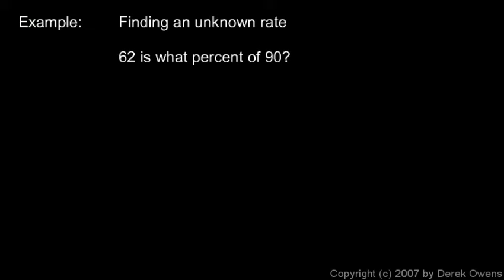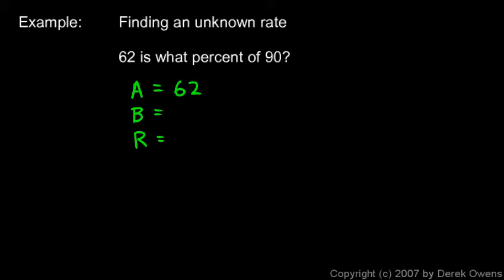Here's an example involving finding an unknown rate: 62 is what percent of 90? The phrase 'what percent' tells us the rate is what we're looking for. The amount is 62 — that's a certain part of the whole — and the base is 90, the total. The rate is our unknown.